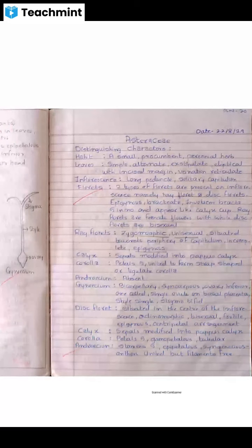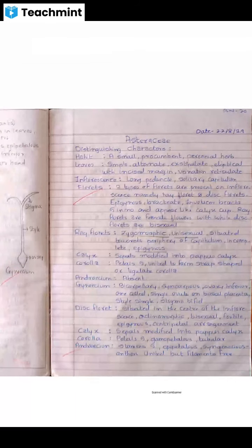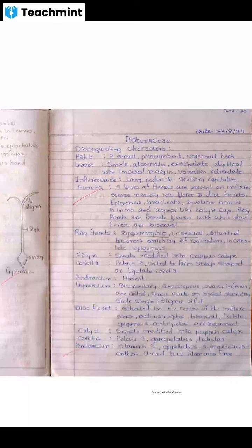Ray florets are female flowers, while disc florets are bisexual. Ray florets are zygomorphic — meaning they have bilateral symmetry — and are unisexual, situated towards the periphery of the capitulum.